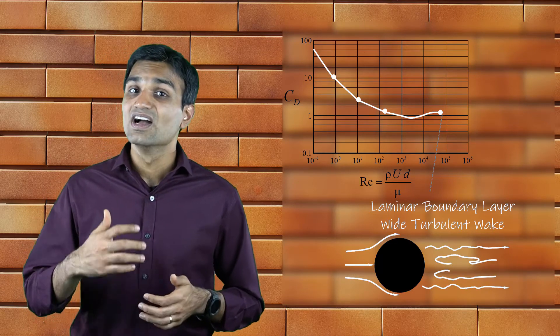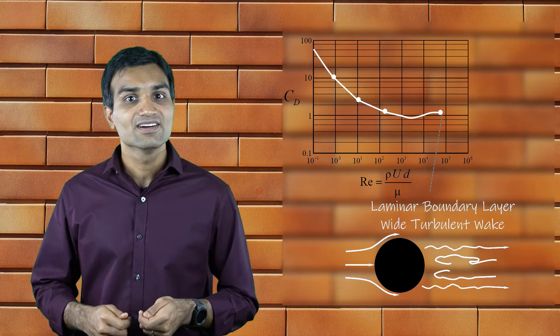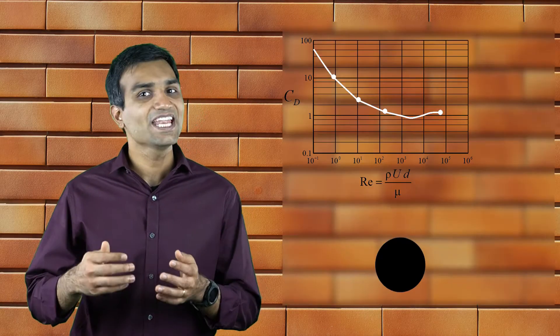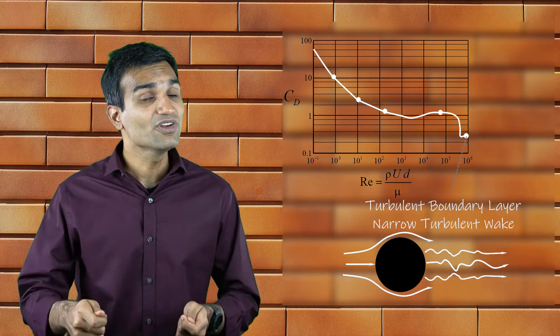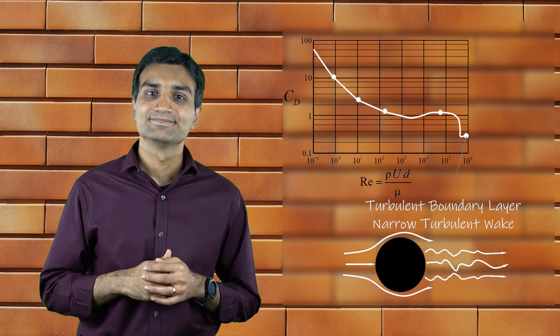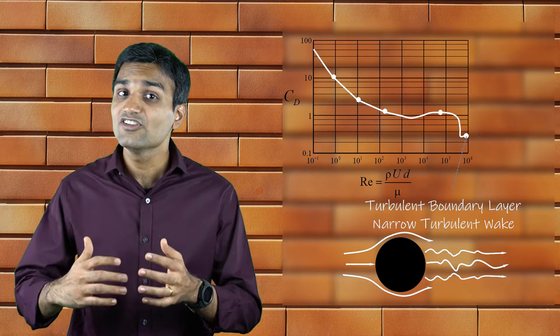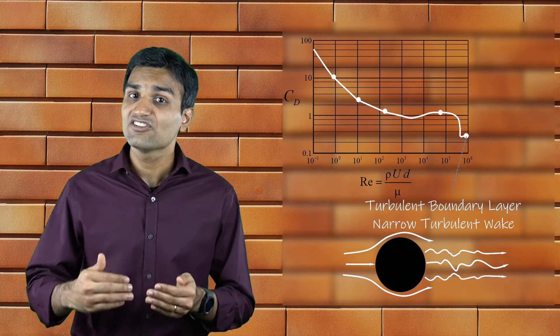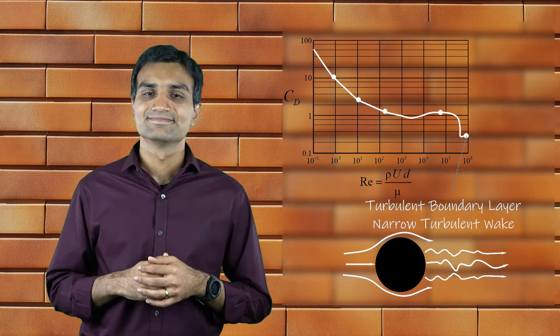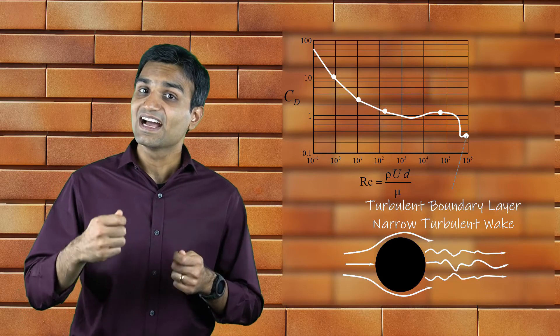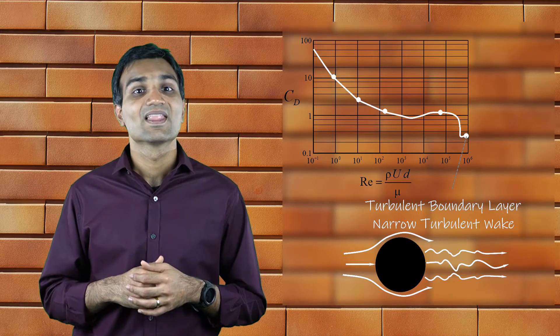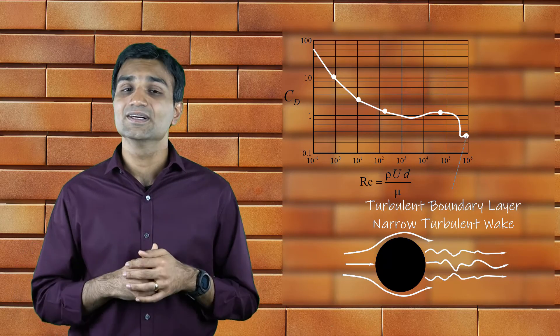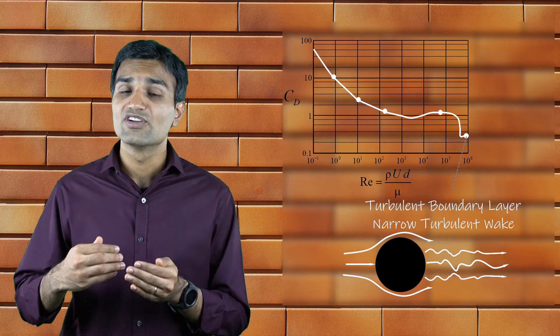As the flow Reynolds number approaches 10 to the power 5, the boundary layer is transitioning from laminar to turbulent. After the critical Reynolds number of 3 into 10 to the power 5 is reached, the drag coefficient drops down significantly because of the boundary layer in the front portion of the cylinder becoming turbulent. Turbulent boundary layers have greater inertial force and can overcome the adverse pressure gradients experienced near the body. Because of this, they are able to remain attached longer, leading to the formation of smaller sized wakes. This reduces the pressure drag experienced by the cylinder and eventually a low drag value is obtained.